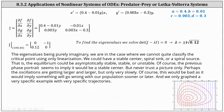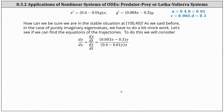Of course, the previous phase portrait seems to imply we have a stable center, but we can't just trust the picture. Perhaps the oscillations are getting larger and larger, but only very slowly. This would be a bad result, as it would imply something will go wrong with our population sooner or later. We also only graphed a specific example with specific trajectories. So how can we be sure that we are in a stable situation at the critical point (100, 40)? In the case of purely imaginary eigenvalues, we have to do a bit more work.